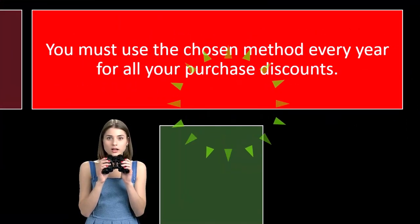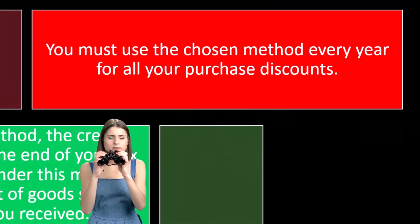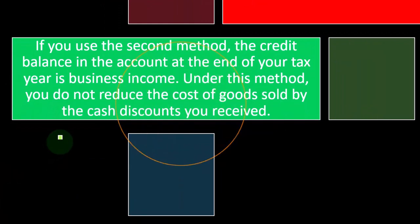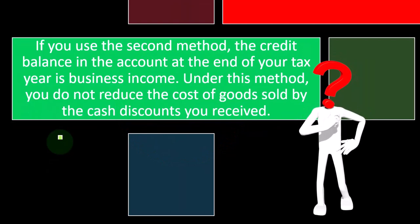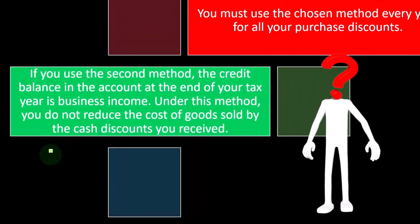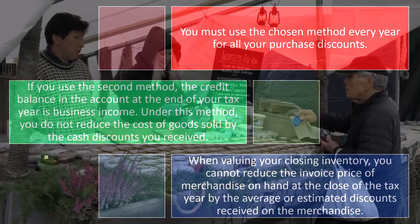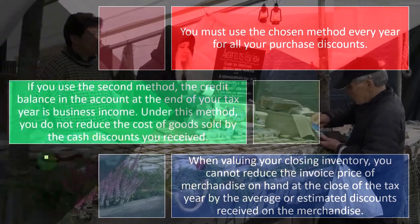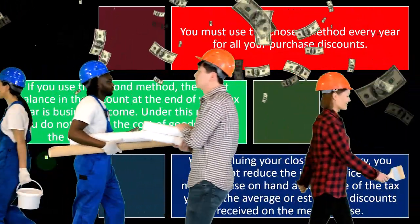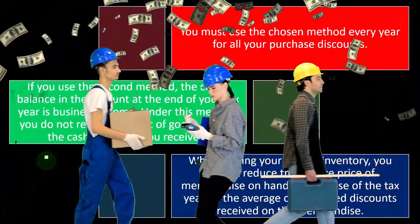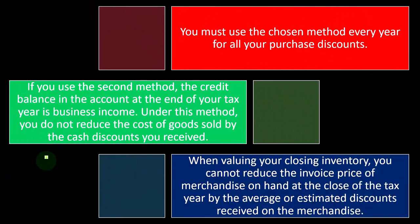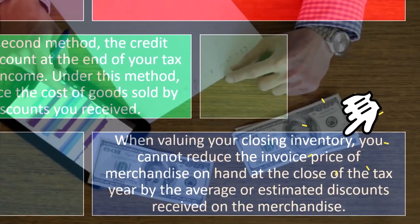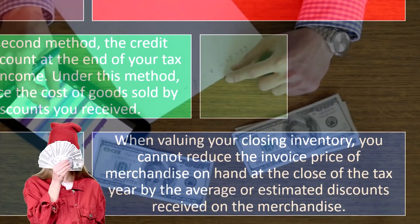You must use the chosen method every year for all of your purchase discounts — consistency is required. If you use the second method, the credit balance in the account at the end of your tax year is business income. Under this method you do not reduce the cost of goods sold by the cash discount received; you record it as income instead. The net effect is the same. Also, when valuing your closing inventory, you cannot reduce the invoice price of merchandise on hand by the average or estimated discount received.